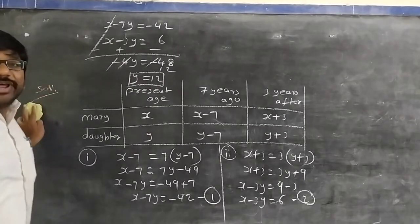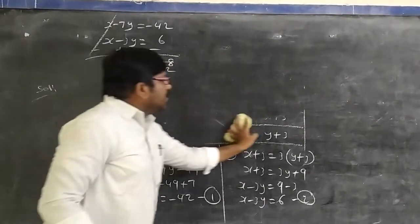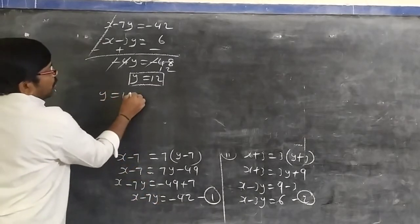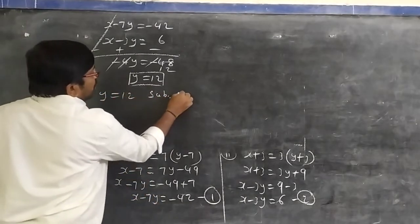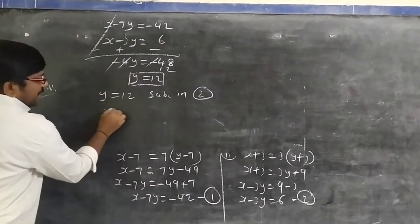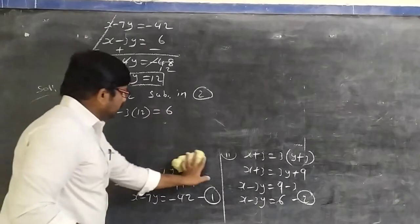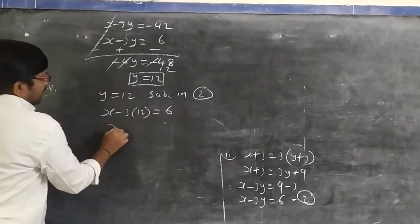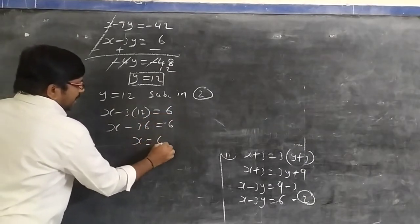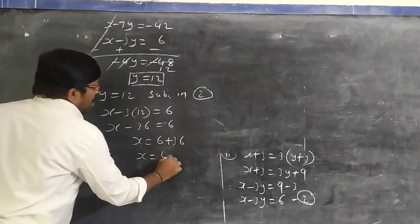With y = 21, substituting into equation 2: x − 3(21) = 6, so x − 63 = 6, giving x = 6 + 36 = 42. Therefore the present age of Mary is 42 years.